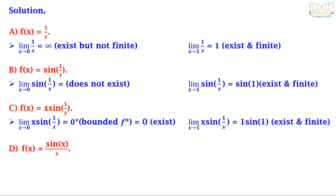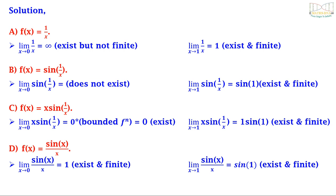For option D, f(x) = sin(x)/x: the limit as x tends to 0 of sin(x)/x equals 1 (a well-known limit), which is existing and finite; and the limit as x tends to 1 equals sin(1), which is also existing and finite. Therefore the correct answers for Example 3 are options C and D.